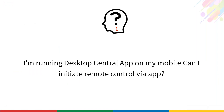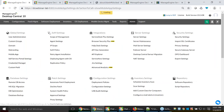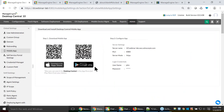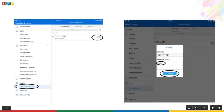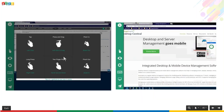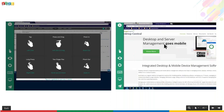Common questions: Can I initiate remote control from the Desktop Central mobile app? Yes — download the mobile app on your smartphone, configure it, and you can search for a computer, click Connect, enter a reason, and use touch gestures to control the machine — even if it's in a different country. The app shows a help card explaining available gestures for controlling the remote computer.